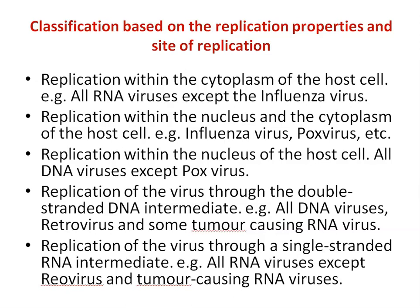The third classification is based on replication properties and site of replication. Replication within the cytoplasm of the host cell — for example, all RNA viruses except influenza virus. Replication within both the nucleus and cytoplasm — for example, influenza virus and poxvirus. Replication within the nucleus — all DNA viruses except poxvirus. Replication through a double-stranded DNA intermediate — all DNA viruses, retroviruses, and some tumor-causing RNA viruses. Replication through a single-stranded RNA intermediate — all RNA viruses except reovirus and tumor-causing RNA viruses.